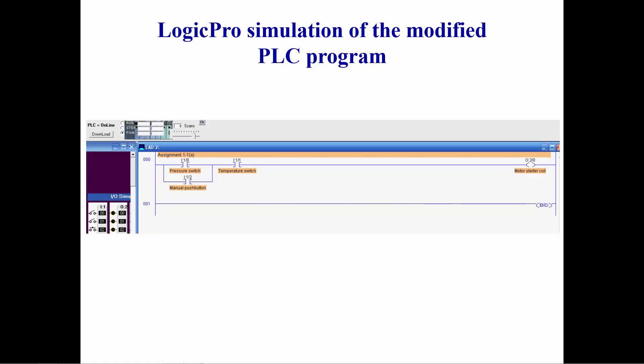Then you would click on download to simulate transferring the change program from the computer you were using to write the program to the memory of the PLC. You would then click on run to change the PLC from the program mode to the run mode.